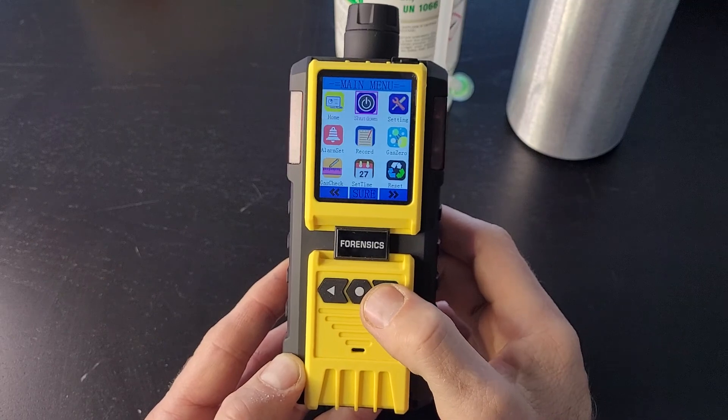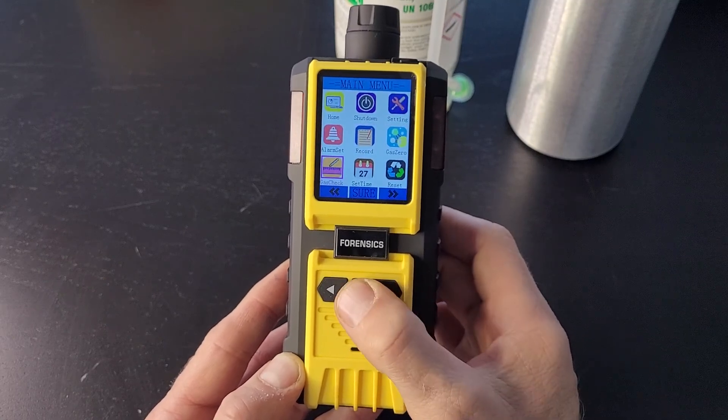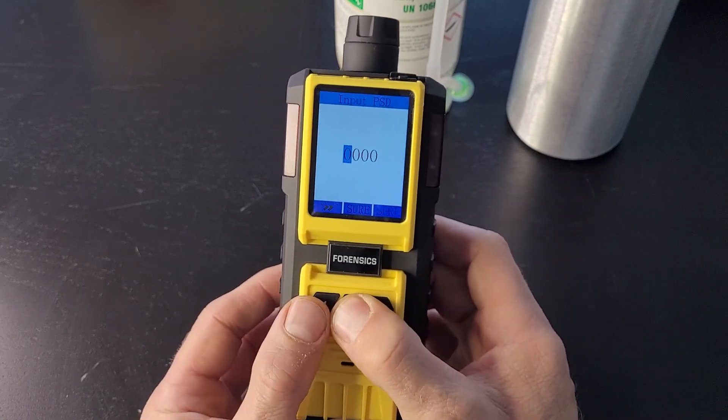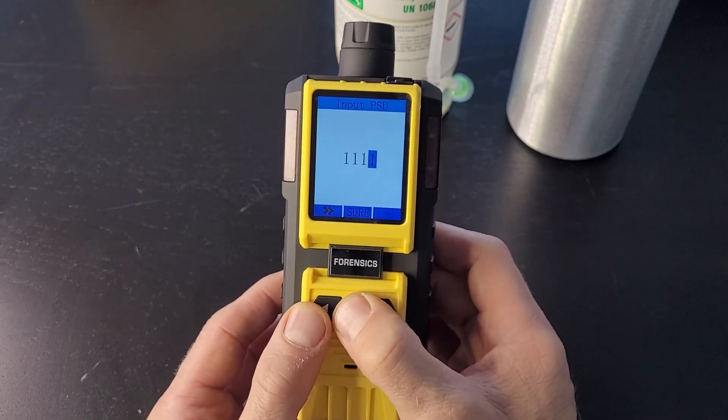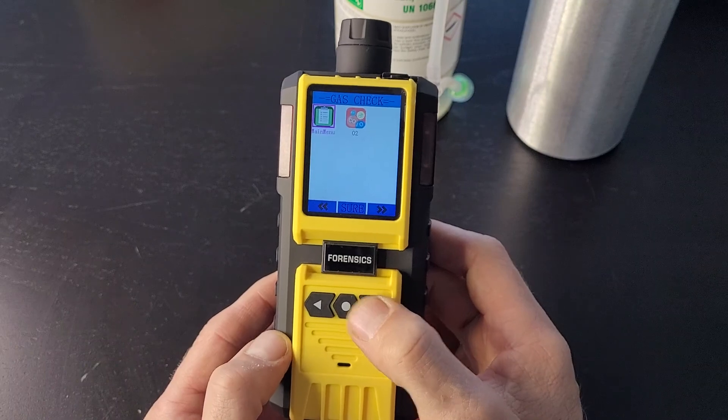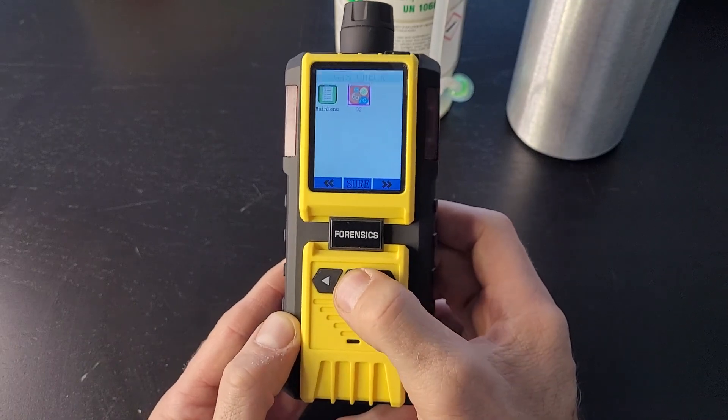So, the way we do it, press menu, go down to gas check, means gas calibration, edit. We're going to pop in our passcode, 1, 1, 1, 1. Select O2, enter.